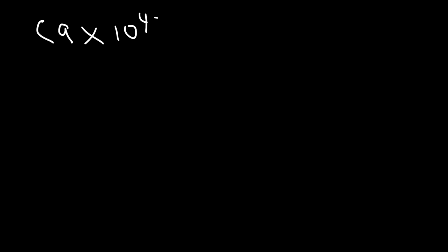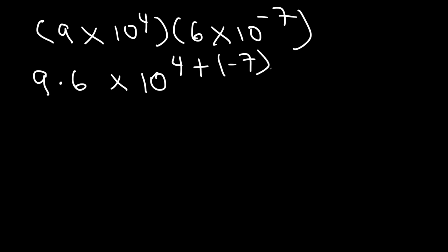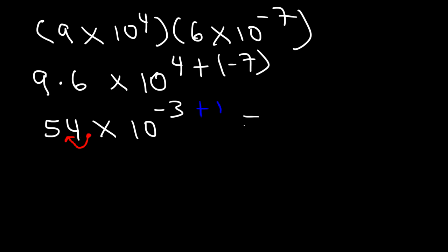Let's try another example: 9 times 10 to the 4 multiplied by 6 times 10 to negative 7. This is going to be 9 times 6, times 10 raised to the 4 plus negative 7, which is the same as 4 minus 7. 9 times 6 is 54 and 4 minus 7 is negative 3. So let's move the decimal one unit to the left — the exponent is going to increase by 1. This becomes 5.4 times 10 to the negative 2.